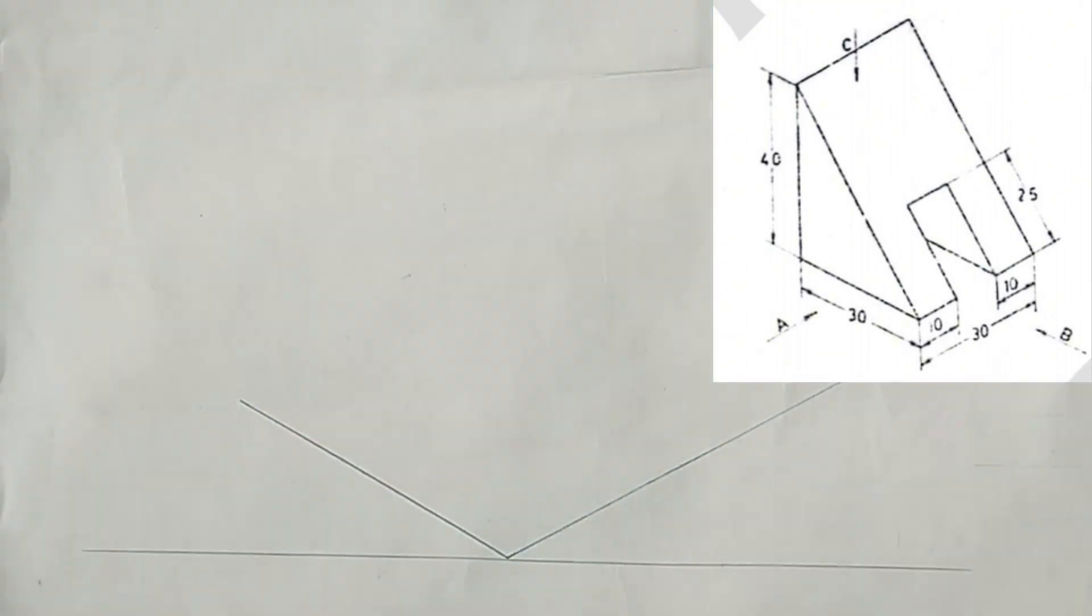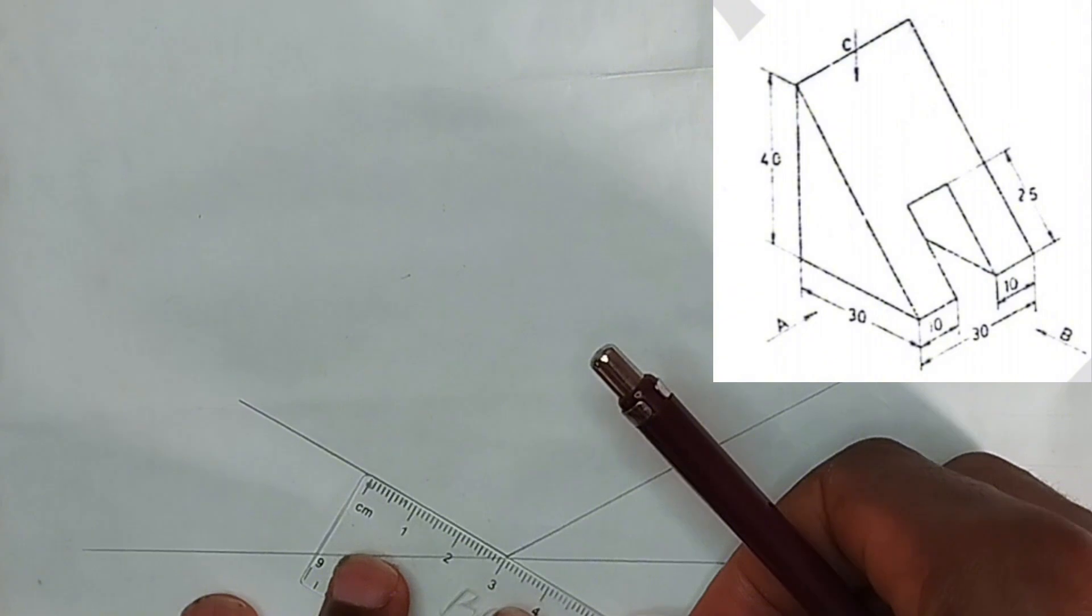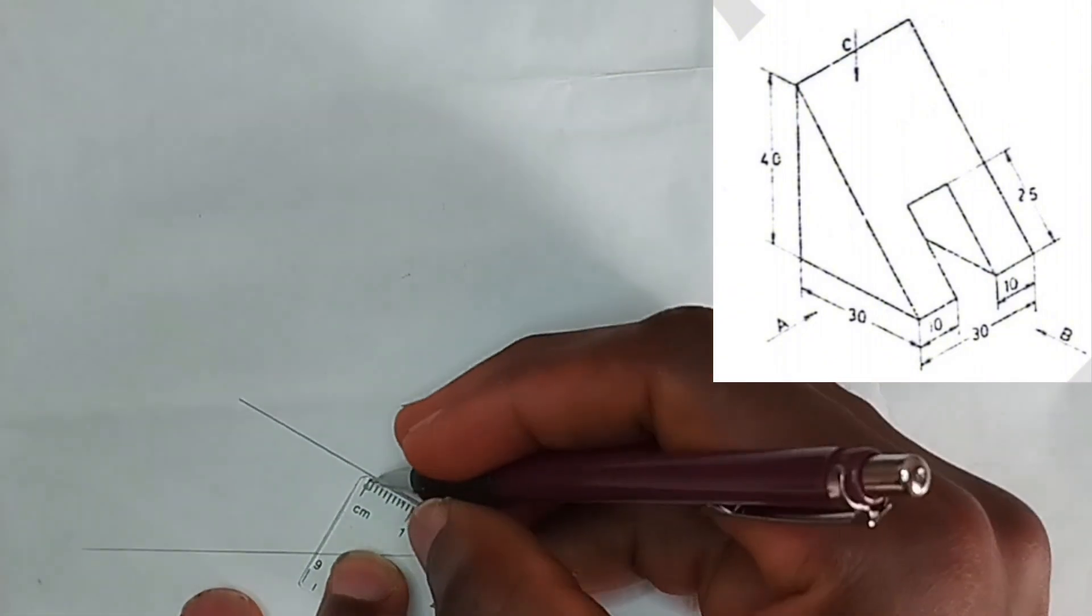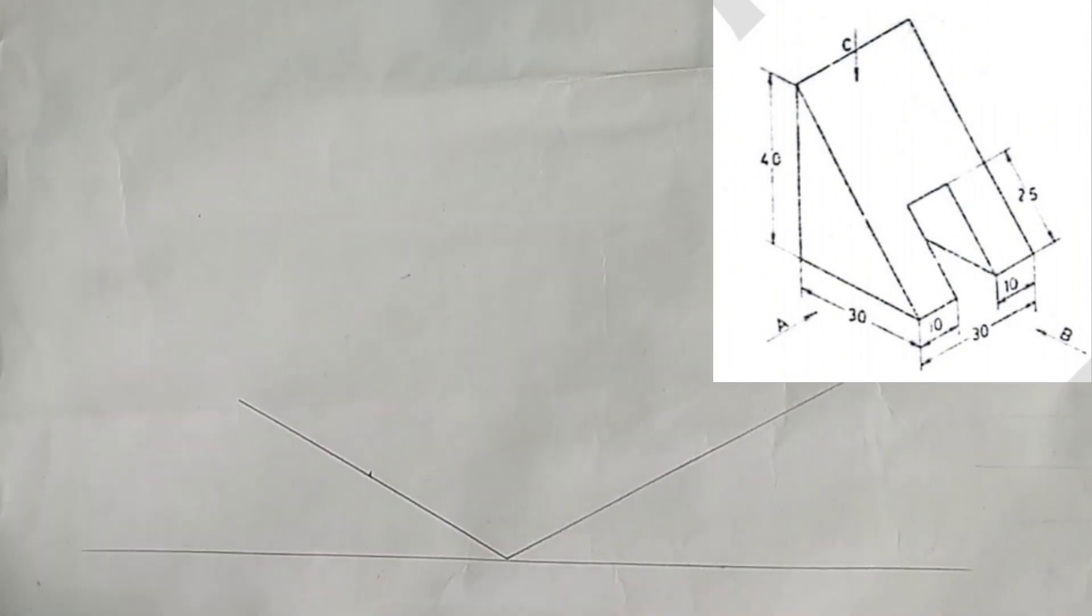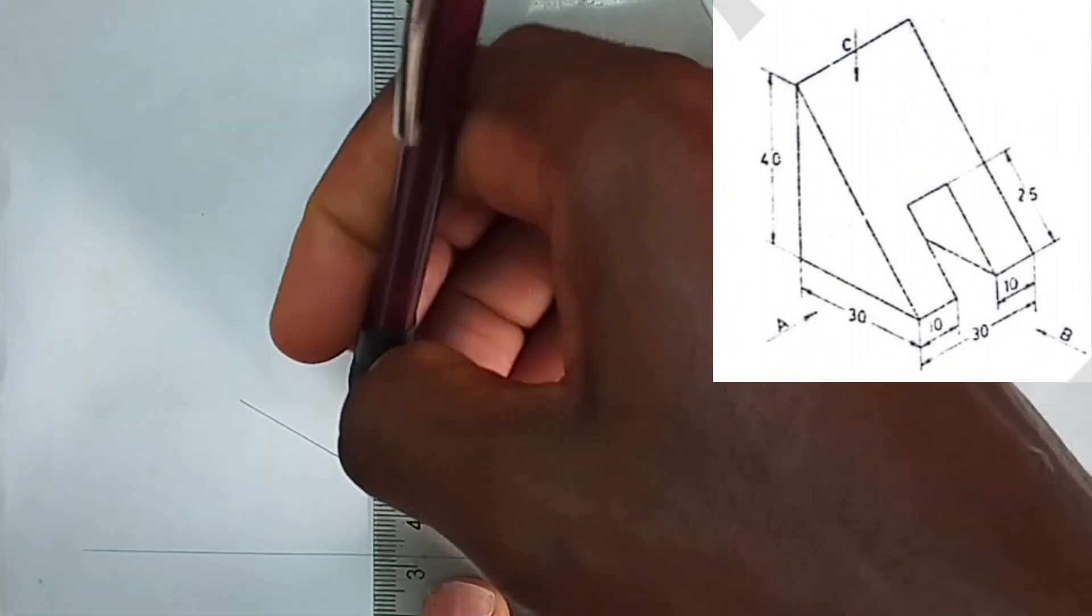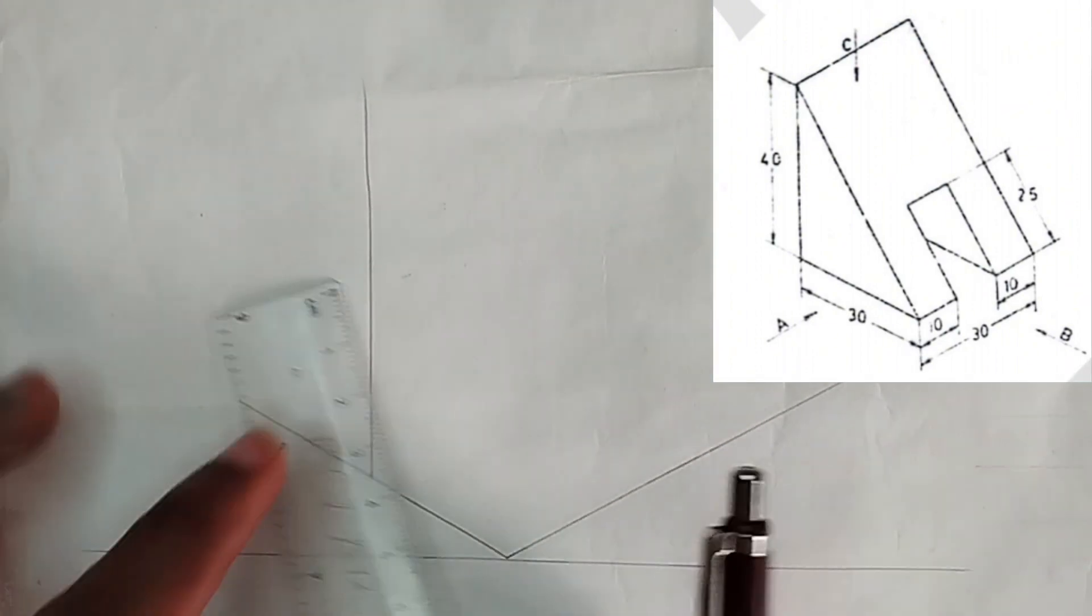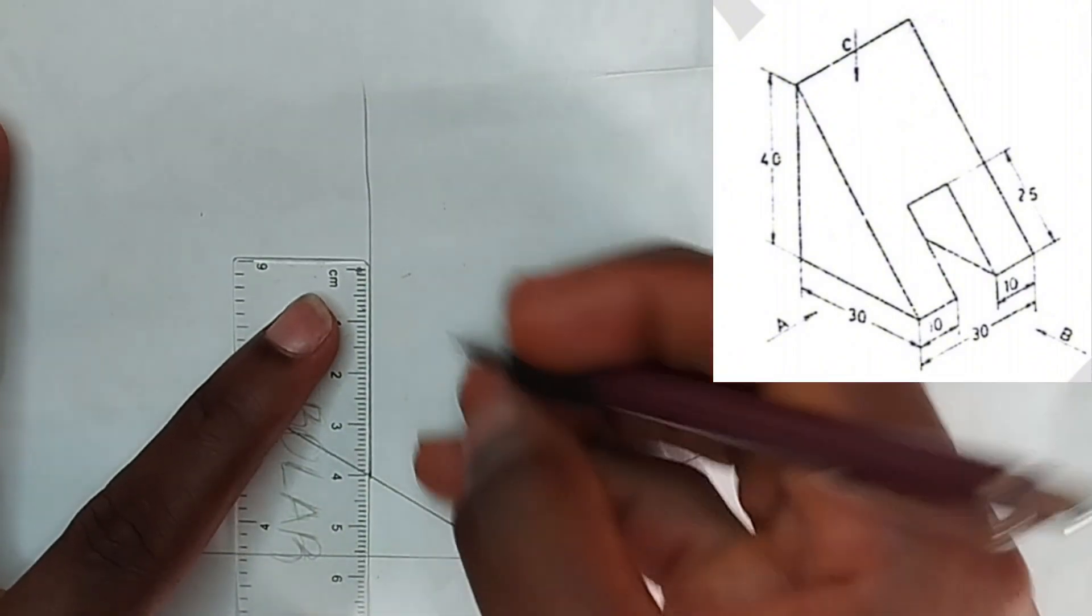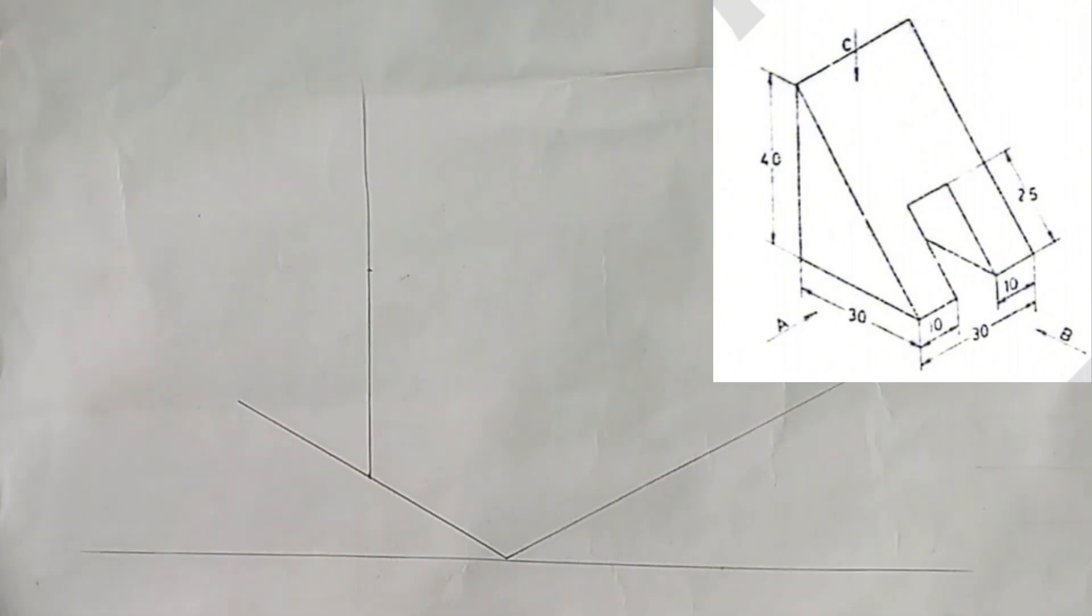As we can see in this part, this place is 30 millimeter, that's three centimeters. So we are going to be picking three centimeter here, we draw our vertical line here. Make use of thin line please. So we pick 40 millimeter here.